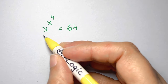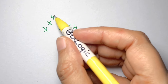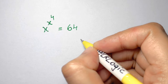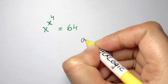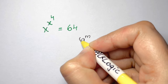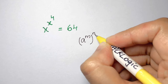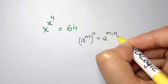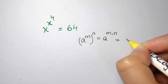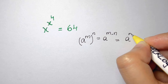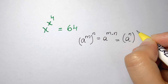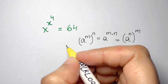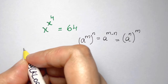Let's solve x to the power of x to the power of 4 equals 64. I'm going to write a law for that: a to the power of m, whole to the power of n — whenever you have power to power, you multiply the powers — equals a to the power of m times n, which is also equal to a to the power of n whole to the power of m. We're going to use these laws when solving this question.